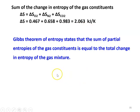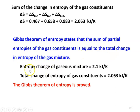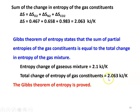Gibbs theorem of entropy states that the sum of partial entropies of the gas constituents equals the total entropy change of the gaseous mixture. The mixture entropy change we calculated is 2.1 kJ/K, and the sum of the constituents' entropy changes is 2.063 kJ/K. Both values are approximately equal, so Gibbs theorem of entropy is proved for this example.